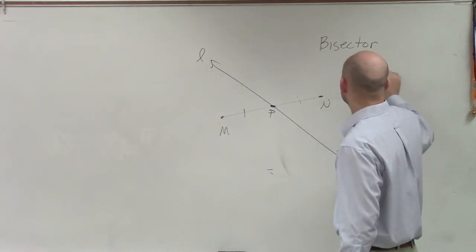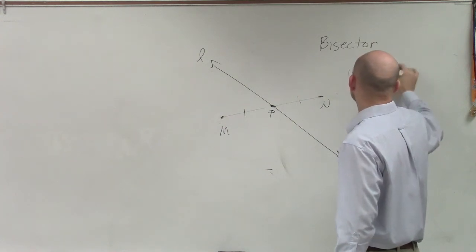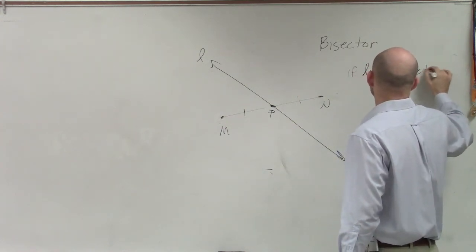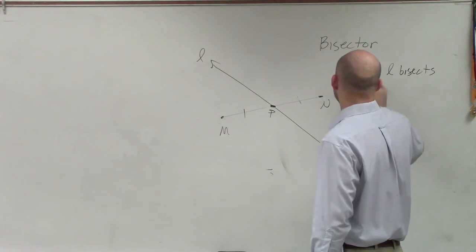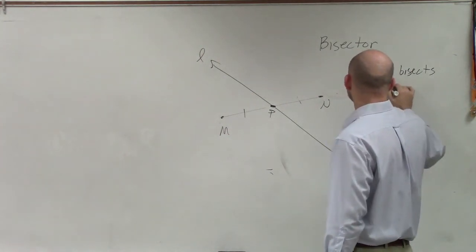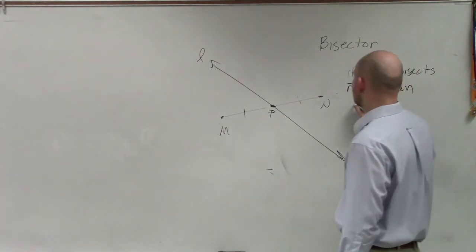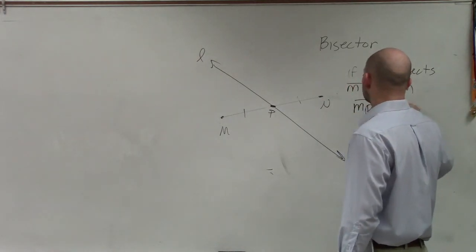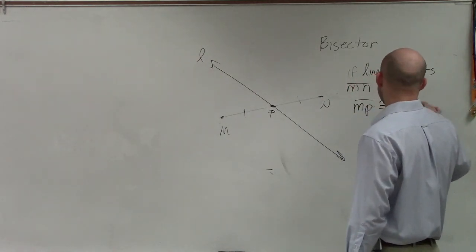So if line L bisects my line segment MN, then the measure of MP is congruent to the measure of NP.